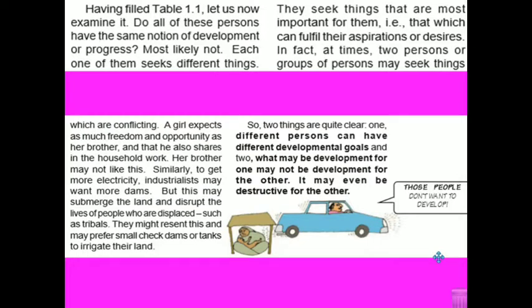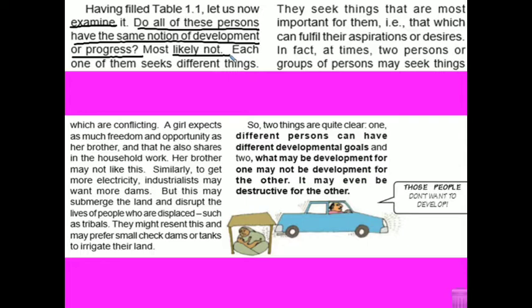So children, having filled the table, let us now examine it. Do all these persons have the same notion of development and progress? In the table, we looked at different people's aspirations, wishes, desires, and notions. Do you think that every person's notion and ideas of development are the same? No, not at all — they all differ. Each one of them needed different things and had different goals for development.